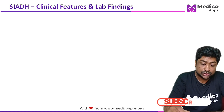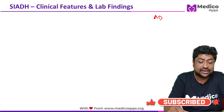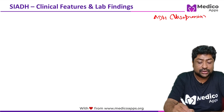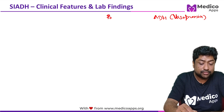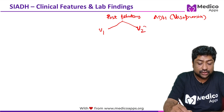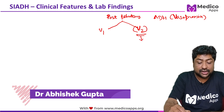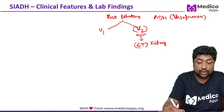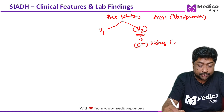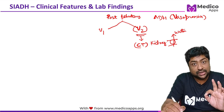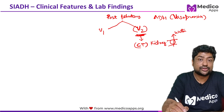What happens in SIADH? First, let's understand what ADH is. ADH is basically anti-diuretic hormone, also called vasopressin, and it is secreted from the posterior pituitary. It acts on two receptors: V1 and V2. V2 receptors are present in the collecting ducts or collecting tubules of the kidney, and the primary function there is water reabsorption. Remember, no electrolyte is reabsorbed — only water reabsorption happens under the influence of vasopressin via V2 receptors.